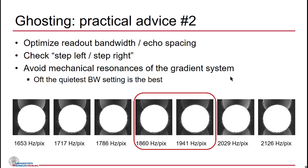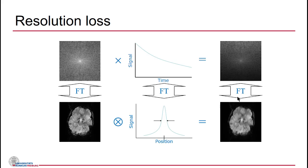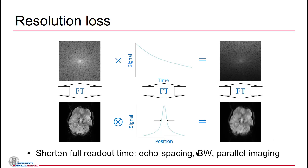Now let's look at magnitude evolution. We have our k-space acquisition, but as we go down the k-space lines, our signal decays away. As the signal fades, it creates a filter in k-space. After Fourier transform, this turns into a convolution with some kind of kernel, which basically smears image features. The message here is: try to be as fast as possible, shorten the full readout time — either by using the largest echo spacing bandwidth or using parallel imaging.